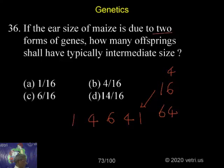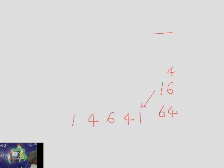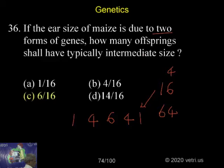Now how many intermediate they are asking? So intermediate will be, how many? 16, six will be the intermediate. For three genes, when I put the question, it was 20. The 20 was the answer for three genes. For two genes, six is the answer. Six by 16 will be the answer.